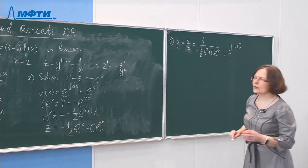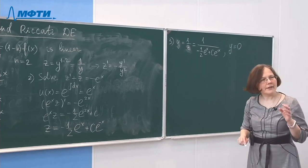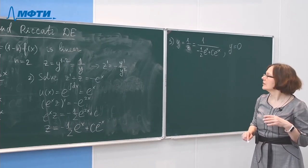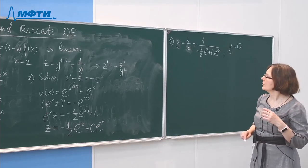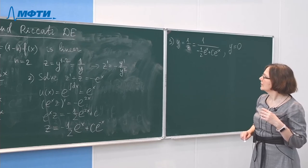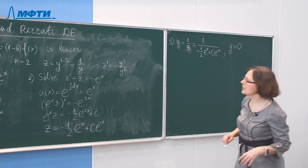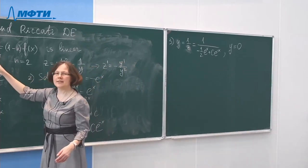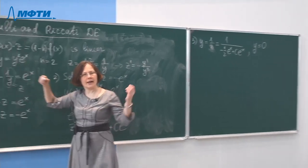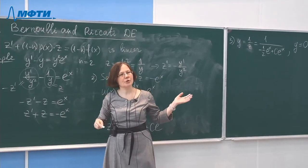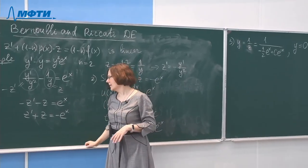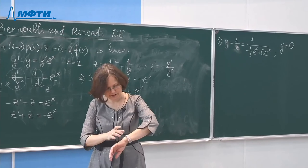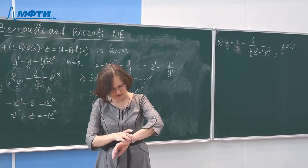In general, for N greater than or equal to 2, Y equals 0 is a solution. More precisely, if N is positive, then Y equals zero will be a solution and should be included.